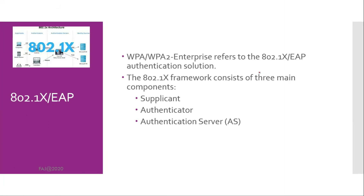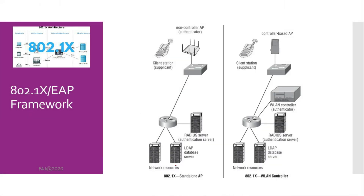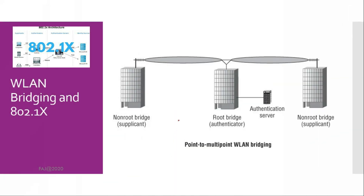802.1X-EAP. WPA/WPA2 Enterprise refers to the 802.1X-EAP authentication solution. The framework consists of three main components: Supplicant, Authenticator, and Authentication Server. You can see the different stand-alone AP and wireless LAN controller environments using the 802.1X-EAP framework. For point-to-multipoint wireless LAN bridging, a root bridge would be the authenticator and a non-root bridge would be the supplicant.